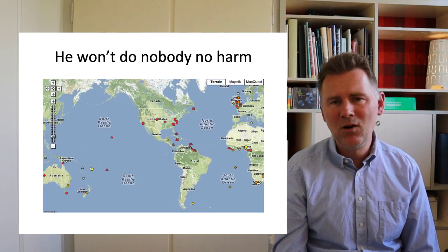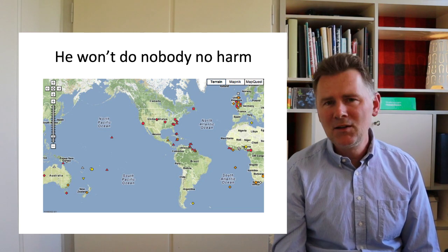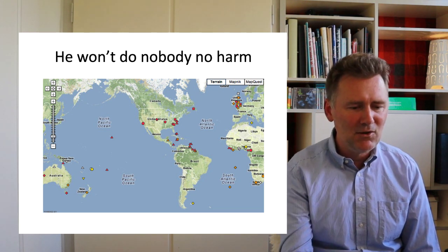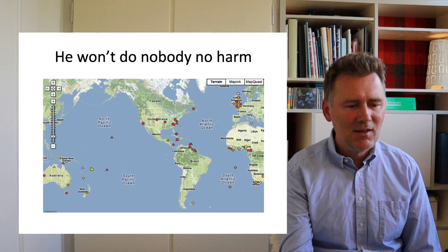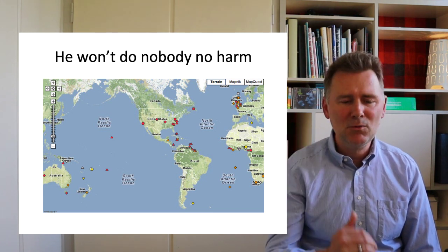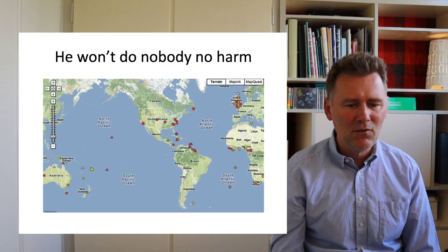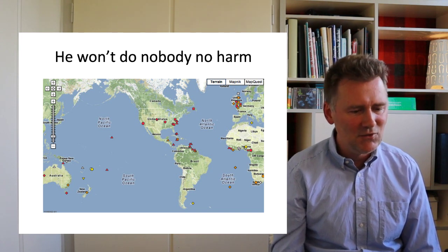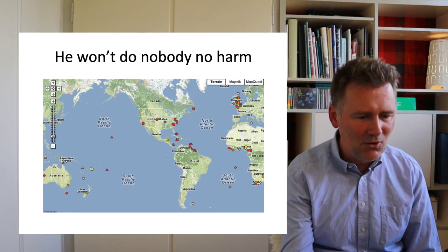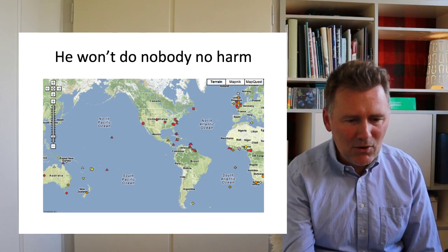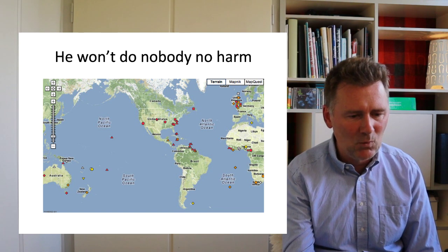'He won't do nobody no harm' — negative concord. Negative concord is used in all varieties marked in red on this slide, and those have a highly frequent use of negative concord. You can see that this is not just an isolated feature — it happens in practically all pidgins and creoles and in a good amount of traditional dialects as well.